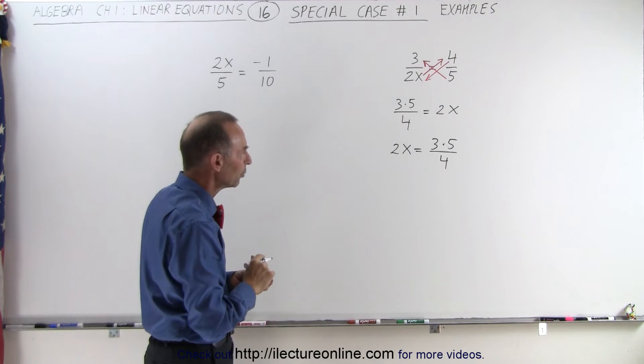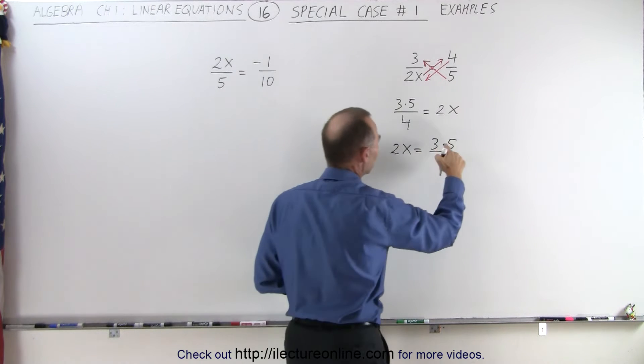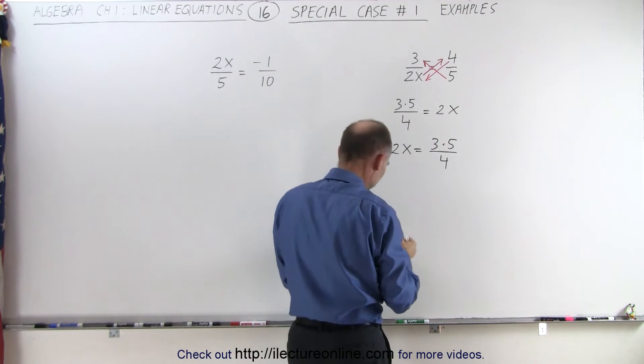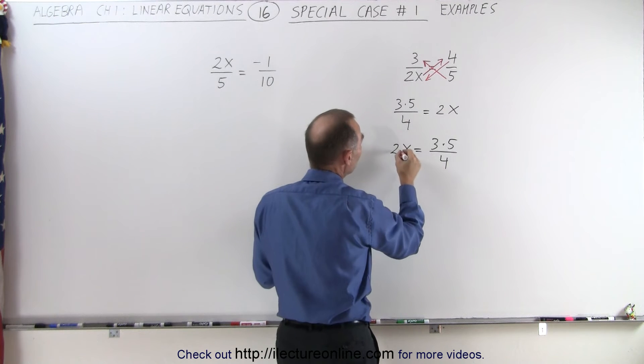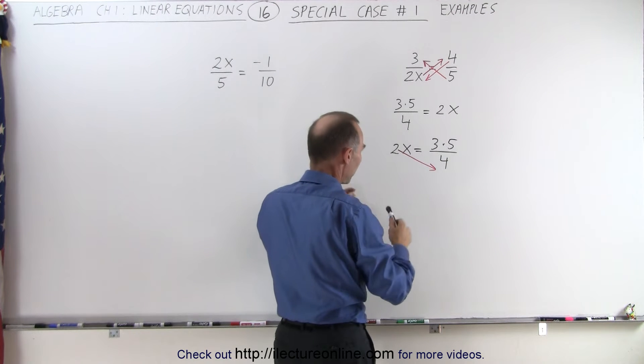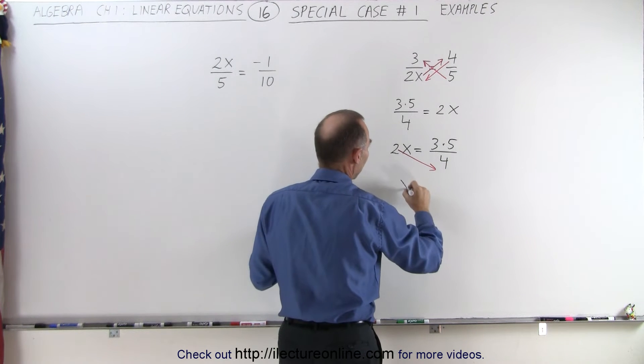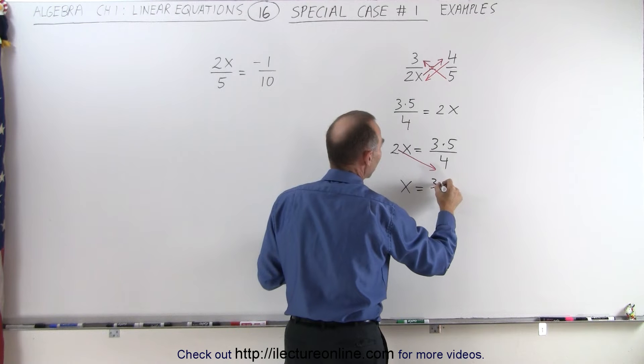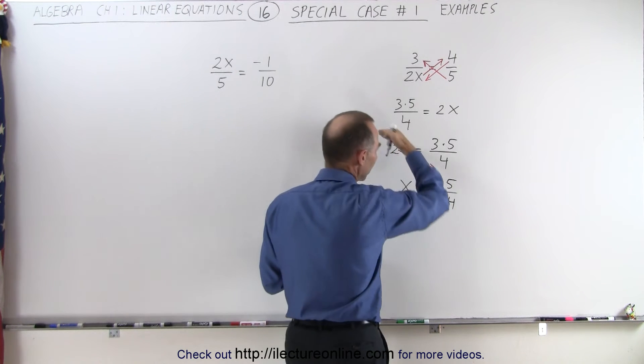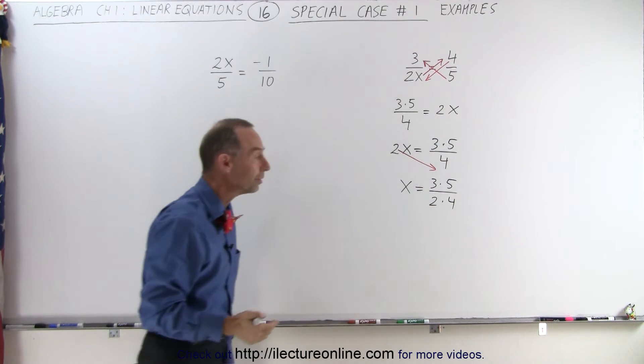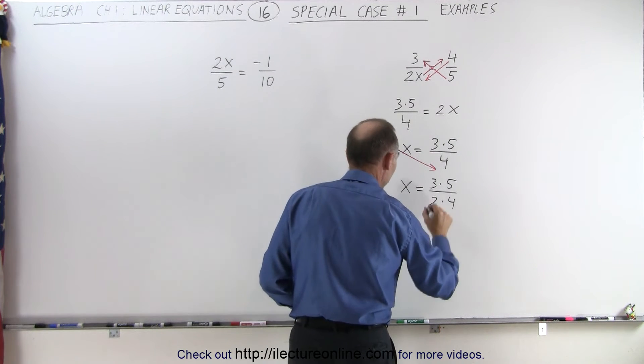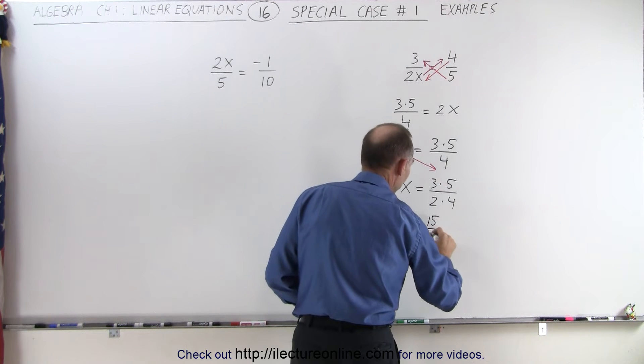The next thing we're going to do is multiply this together and move the 2 over. So I'm going to move the 2 from there to there across the diagonal, which means that now I end up with x equals 3 times 5 divided by 2 times 4. I can simply finish the problem. That means x equals 15 divided by 8.